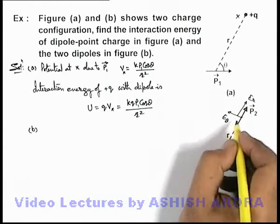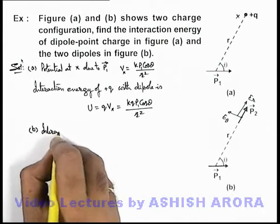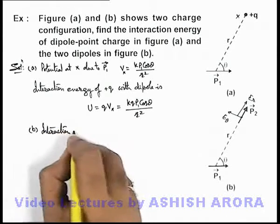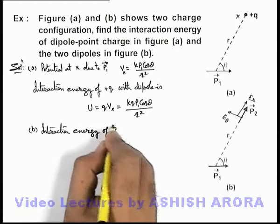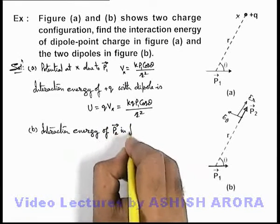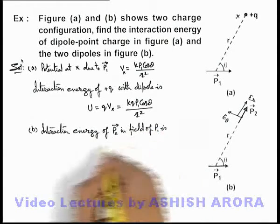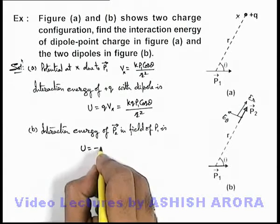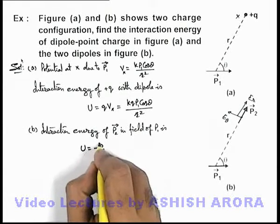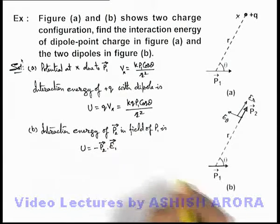So we can easily find out the interaction energy of dipole p2 in field of p1. This interaction energy can be written as minus p2 dot the electric field due to the dipole p1.